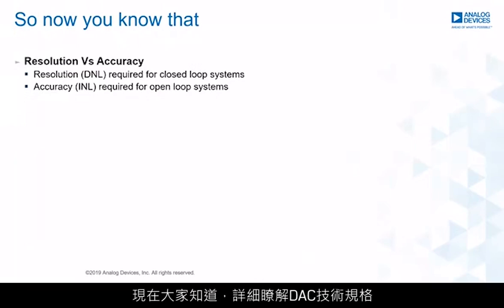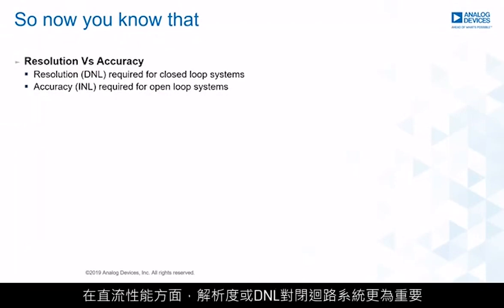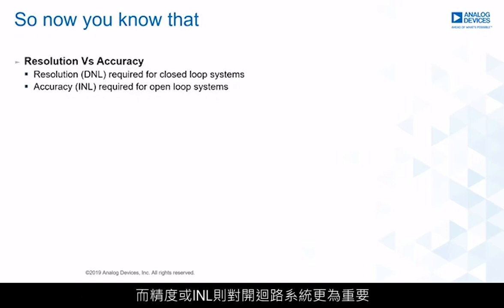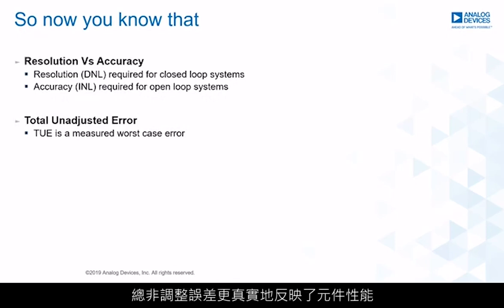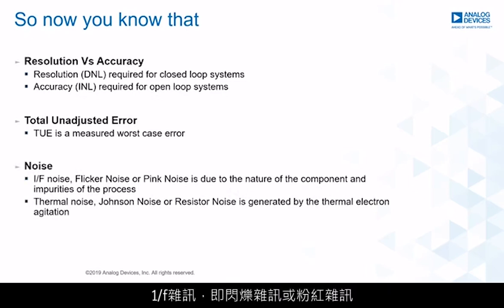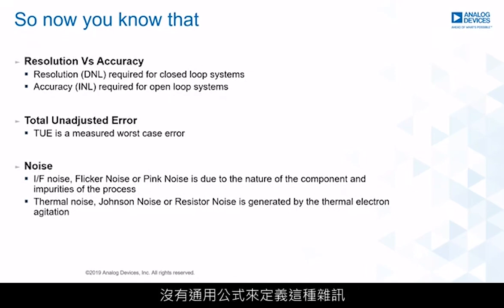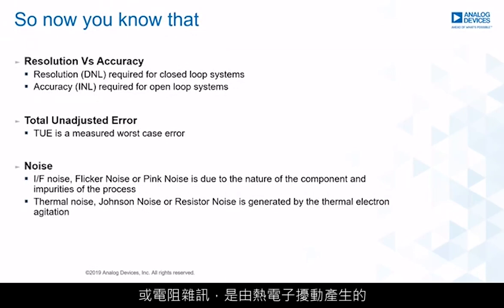Understanding DAC specifications in detail enables better DAC selection for optimum system performance. In terms of DC performance, resolution or DNL is more important for a closed-loop system, while accuracy or INL is more important for an open-loop system. Total and adjusted error provides a truer indication of device performance than simply adding worst-case maximum error sources together. 1/f noise, or flicker noise, is due to the nature of components and process impurities with no general defining equation, whereas thermal noise — Johnson noise or resistor noise — is generated by thermal electron agitation and is proportional to the resistance of the DAC.